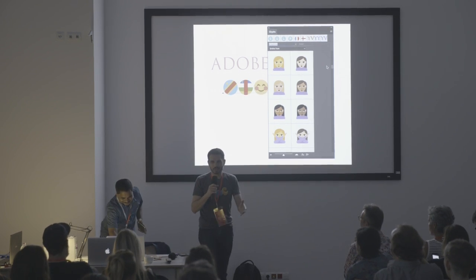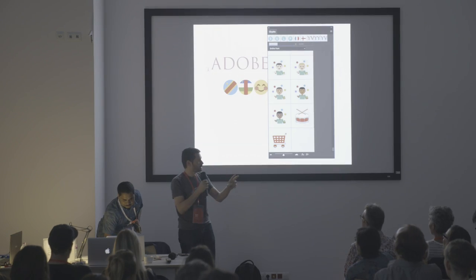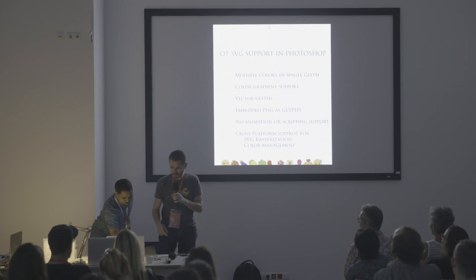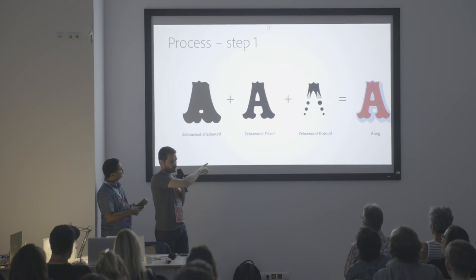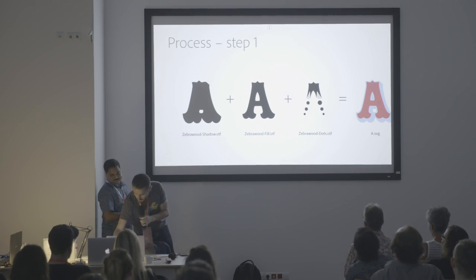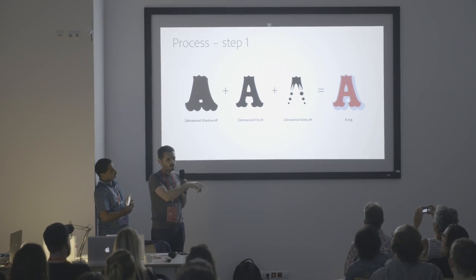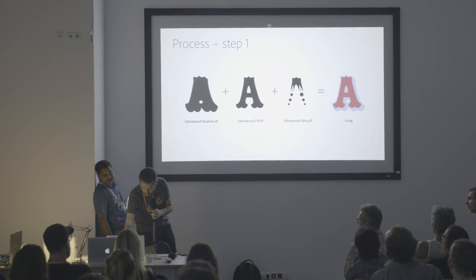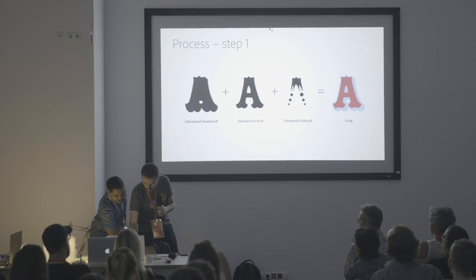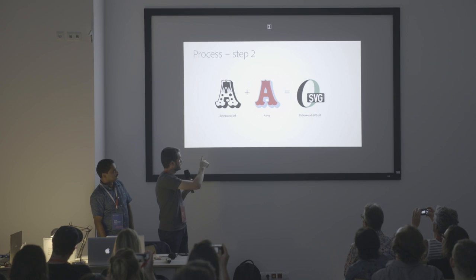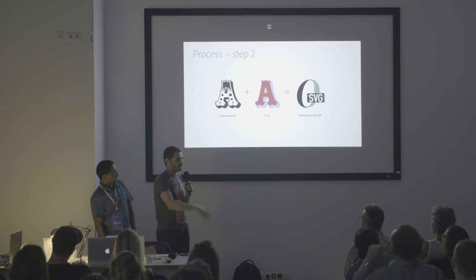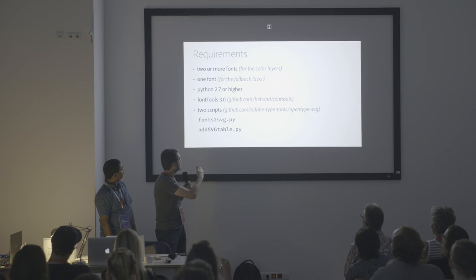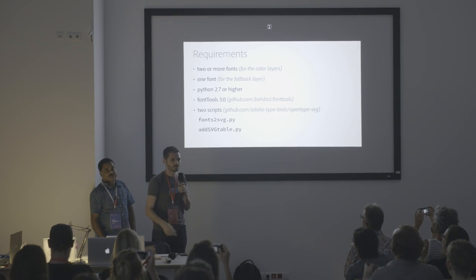So you're probably wondering: how do I make OpenType SVG fonts? You can do it in two steps. Step one: get a series of SVG files. Step two: take a basic font followed by a series of SVGs, and you get an OpenType SVG font. If you have any more questions, approach me outside.